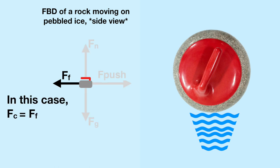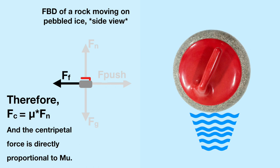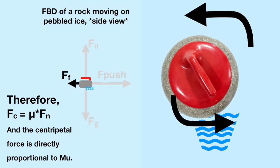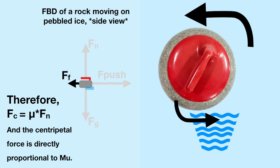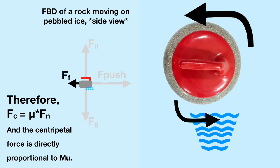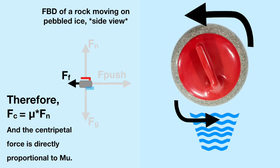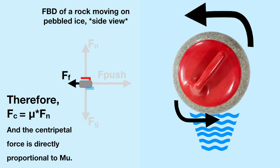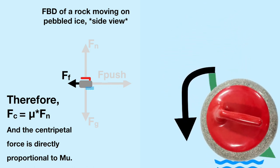Here is a free body diagram of the rock moving on pebbled ice. In this case, the centripetal force, or the force necessary to turn, is equal to the force of friction. Therefore, the centripetal force also equals mu times Fn, and the centripetal force is directly proportional to the coefficient of friction. As the pressure on the front of the rock creates a thin layer of water, the friction on the front of the rock decreases because the mu of the rock on ice is greater than of the rock on water. Thus, the centripetal force of the front of the rock decreases, and the force of the back of the rock, spinning it counterclockwise, takes over.